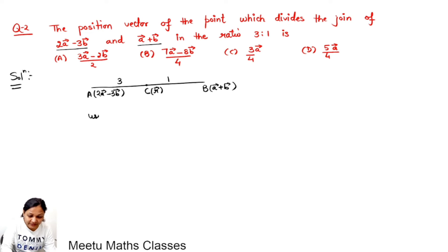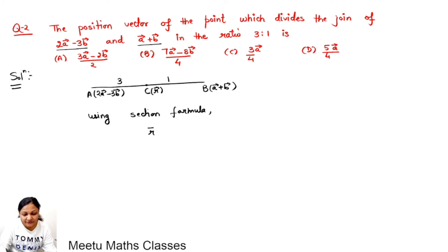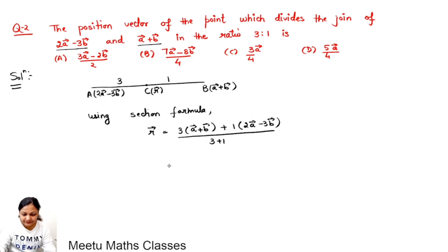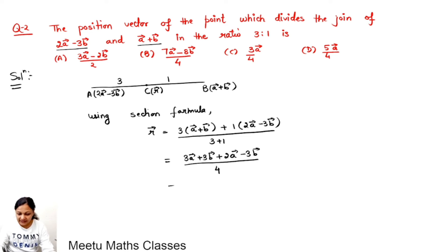Let r be the position vector of C. Using the section formula, the position vector of C is 3 times the position vector of B plus 1 time the position vector of A, all divided by 3 plus 1. That gives (3(a plus b) plus (2a minus 3b)) upon 4, which equals 5a upon 4, and option D is correct.